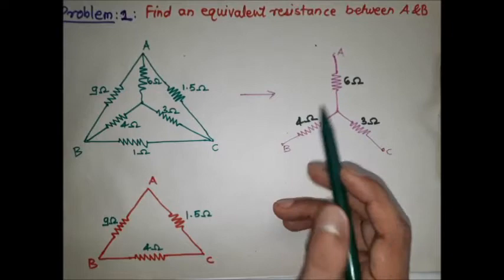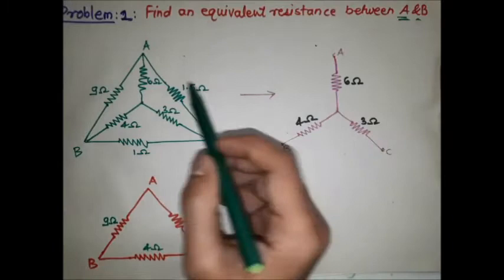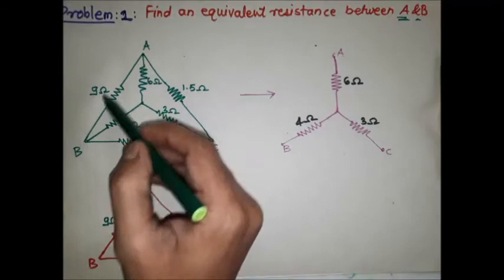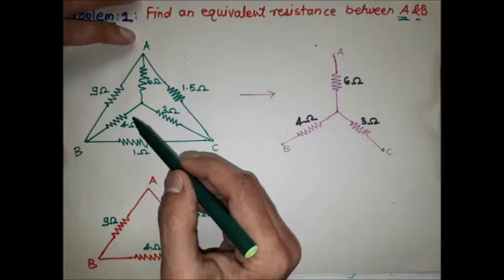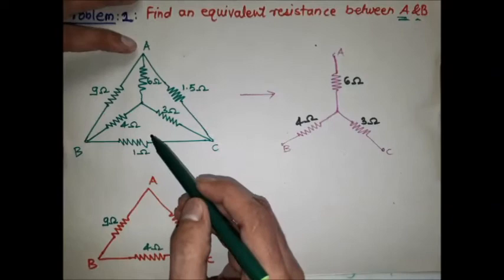The second problem is based on star-delta transformation: find the equivalent resistance between terminals A and B. The outer network is a delta network and the inner network is a star network. Since we are not directly reducing the resistance between A and B, we are reducing the other circuit.